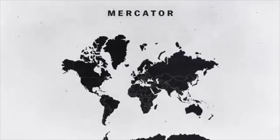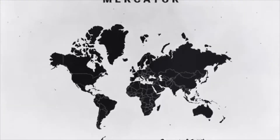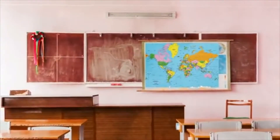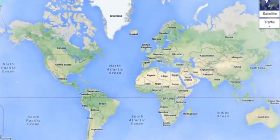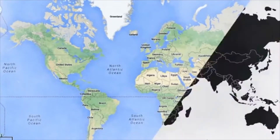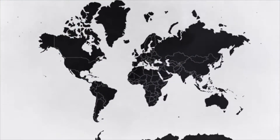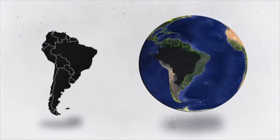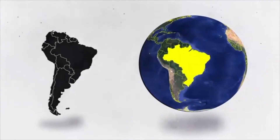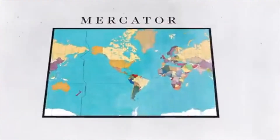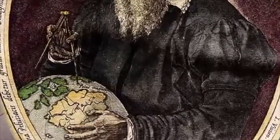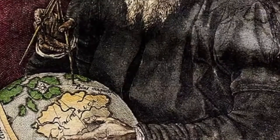This map is called the Mercator projection. If you're American, you probably studied this map in school. It's also the projection that Google Maps uses. The Mercator projection is popular for a couple of reasons. First, it generally preserves the shape of countries — Brazil on the globe has the same shape as Brazil on the Mercator projection. But the original purpose of the Mercator projection was navigation; it preserves direction, which is a big deal if you're trying to navigate the ocean with only a compass.